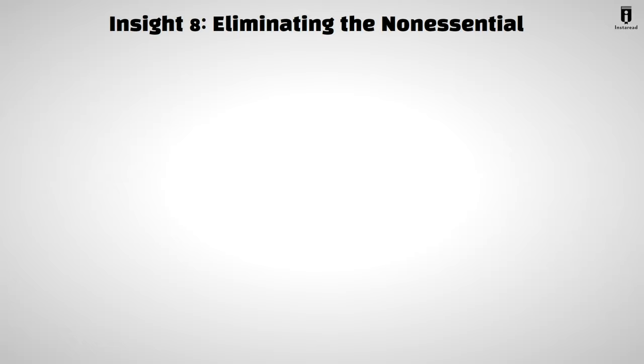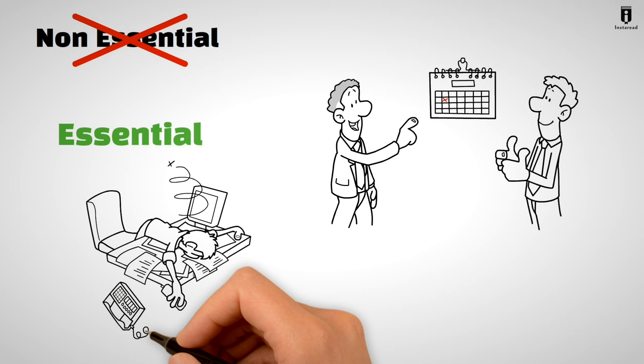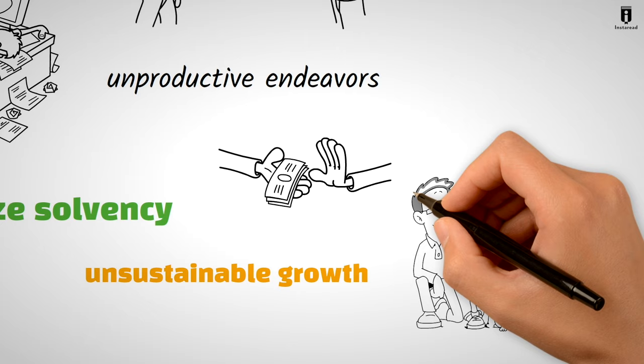Insight 8. Eliminating the Non-Essential. Essentialism means becoming an editor of your life. Remove non-essentials to make the essential clear. Set boundaries for when you're available for work. And don't let sunk costs keep you tied to unproductive endeavors. Make conscious trade-offs to prioritize solvency over unsustainable growth. By letting go of what doesn't serve your goals, you create space for what truly matters.